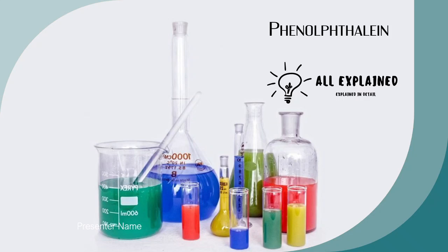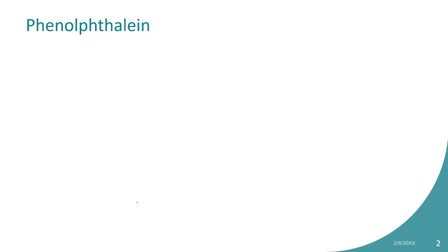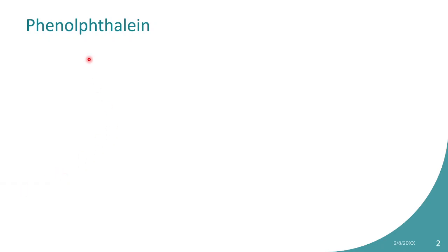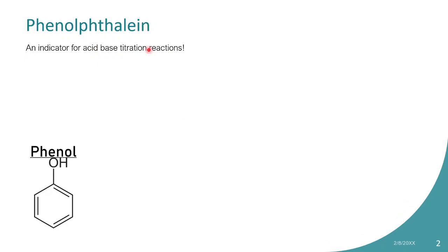Let's explore phenolphthalein today. Phenolphthalein is a very common indicator used in laboratories, used in acid-base titrations. Let's first understand what the molecule looks like, and then we can understand how it works as an indicator.